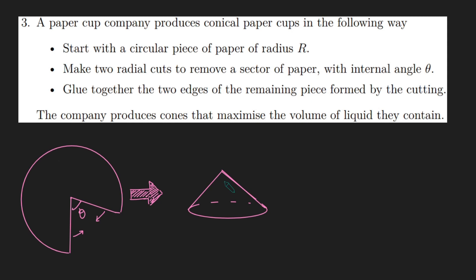If you want to go for a certain role, you have to do a maths test. This is one of the questions from their sample test, which I think is quite interesting. A paper company produces conical paper cups in the following way. They start with a circular piece of paper of radius R, like so. And then we take two radial cuts to remove a sector, and the angle there is theta.